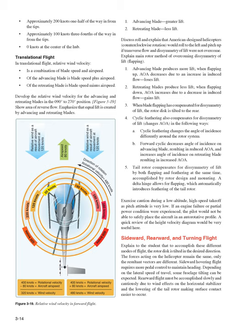The main rotor overcomes dissymmetry of lift through flapping: 1. The advancing blade produces more lift — when flapping up, AOA decreases due to an increase in induced flow, losing lift. 2. The retreating blade produces less lift — when flapping down, AOA increases due to a decrease in induced flow, gaining lift. 3. When blade flapping has compensated for dissymmetry of lift, the rotor disc is tilted to the rear. 4. Cyclic feathering also compensates for dissymmetry of lift — forward cyclic decreases angle of incidence on the advancing blade, resulting in reduced AOA, and increases angle of incidence on the retreating blade, resulting in increased AOA. 5. The tail rotor compensates for dissymmetry of lift by both flapping and feathering simultaneously, accomplished by rotor design and mounting. A delta hinge allows for flapping, which automatically introduces feathering of the tail rotor.